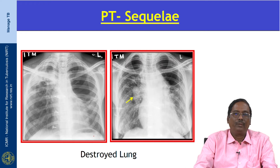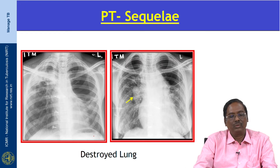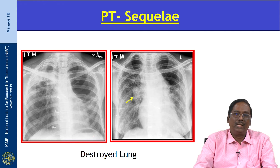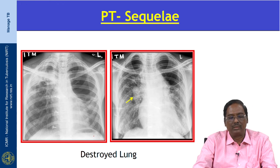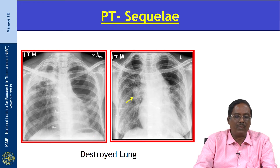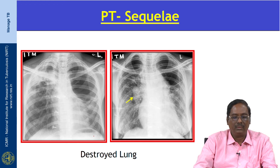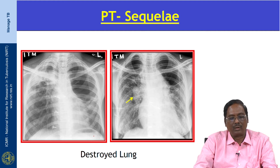Coming to TB sequelae: sequelae can occur in both primary and post-primary tuberculosis. Up to 40 percent of patients with post-primary TB have a marked fibrotic response, which manifests as atelectasis, retraction of the hilum, mediastinal shift to the fibrotic side, and compensatory emphysema.